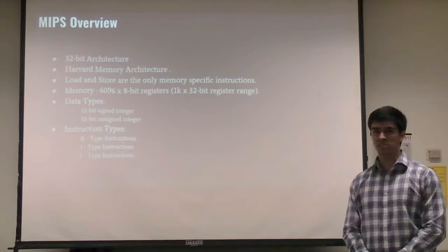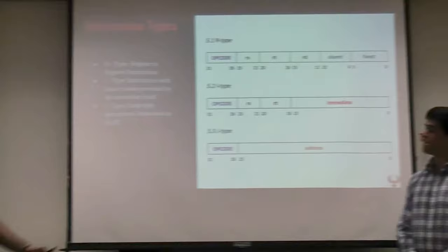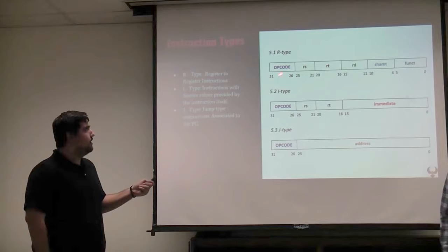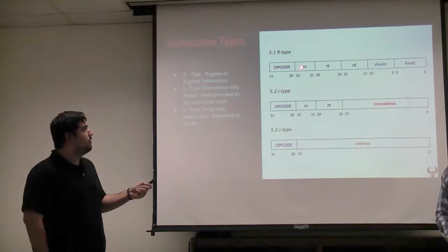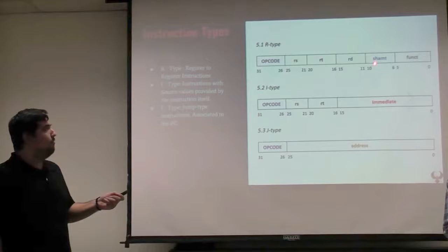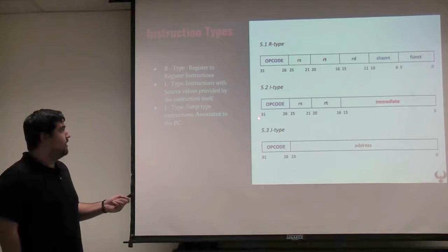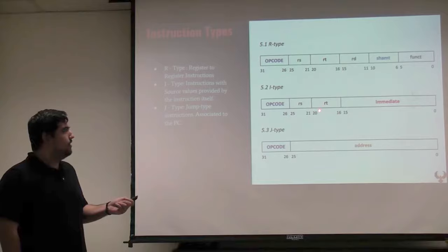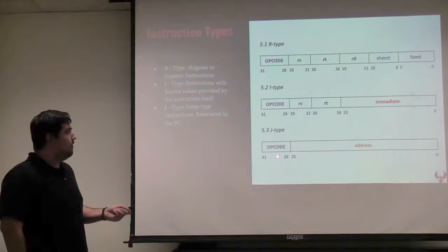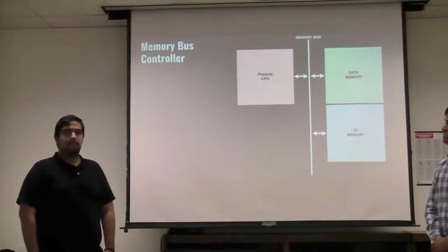It also has three different instruction types: R, I, and J. For the R type, we have a 6-bit opcode — in the decode state, if this is 0, it determines it's an R type instruction. For the R type, we have two source registers RS and RT, and a destination register RD. We also have a 5-bit shift amount and a 6-bit function select. Moving on to I type: a 6-bit opcode, RS source register, RT destination register, and a 16-bit immediate value. We also have a J type, which is just a 6-bit opcode with 26-bit address.